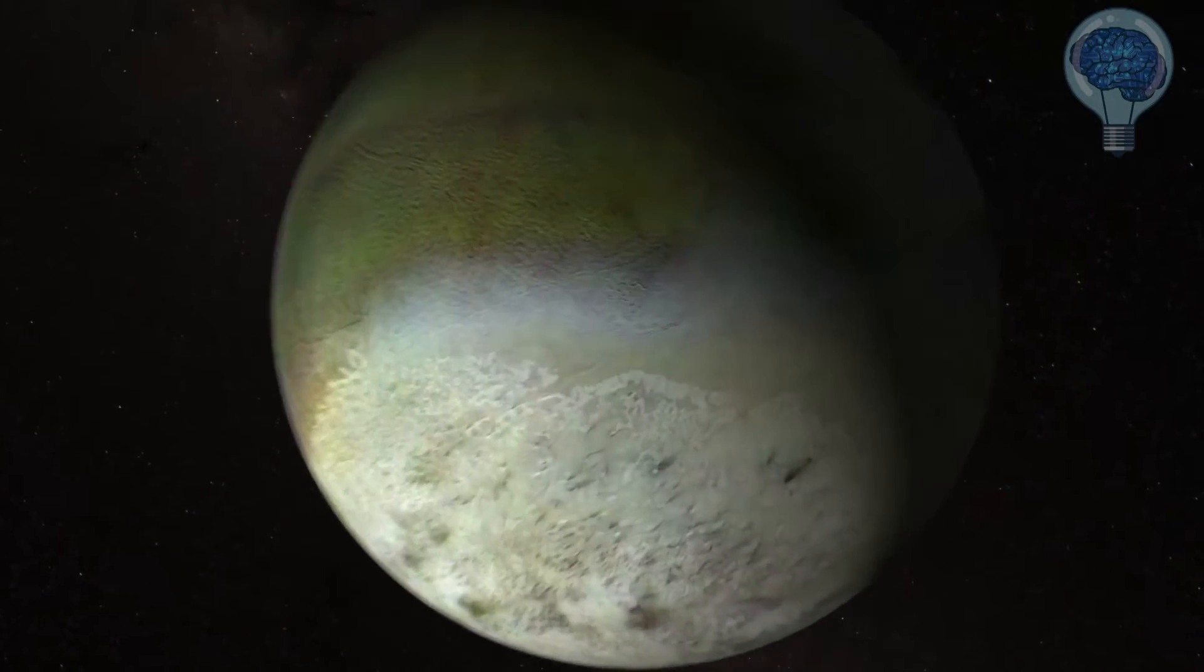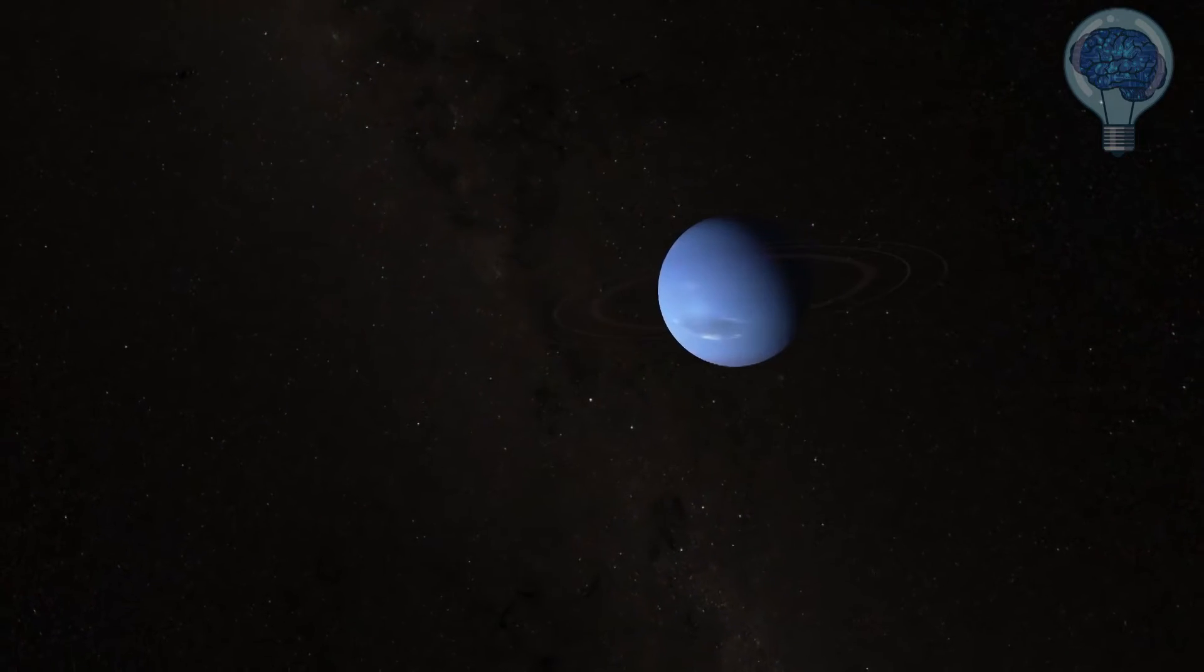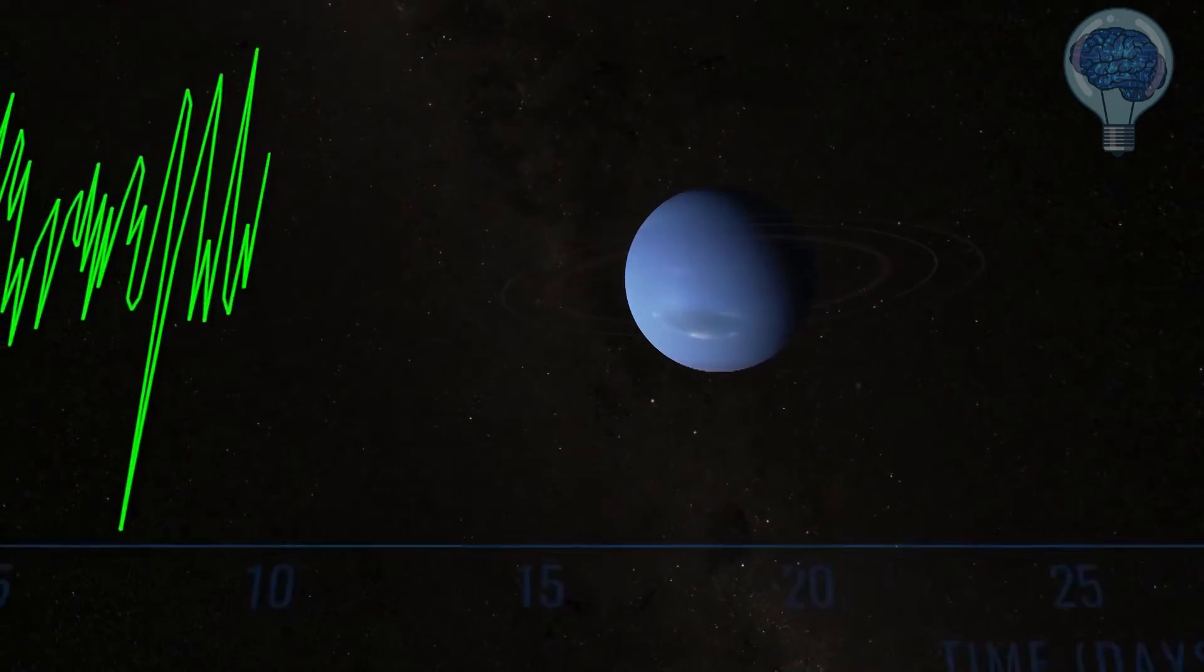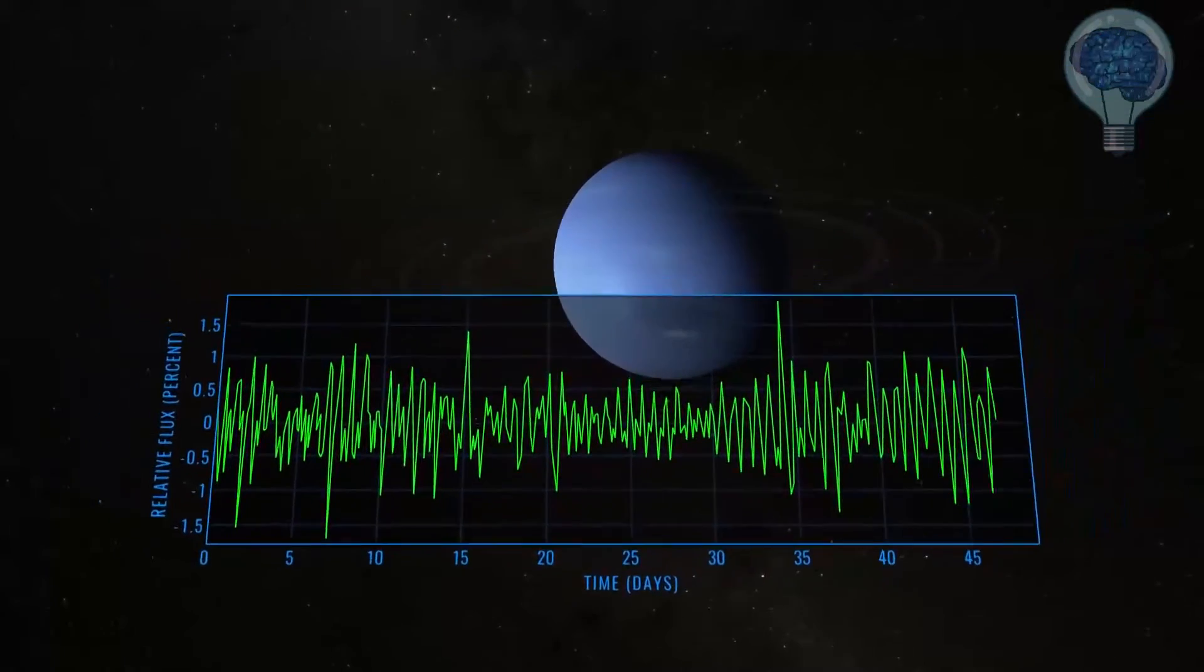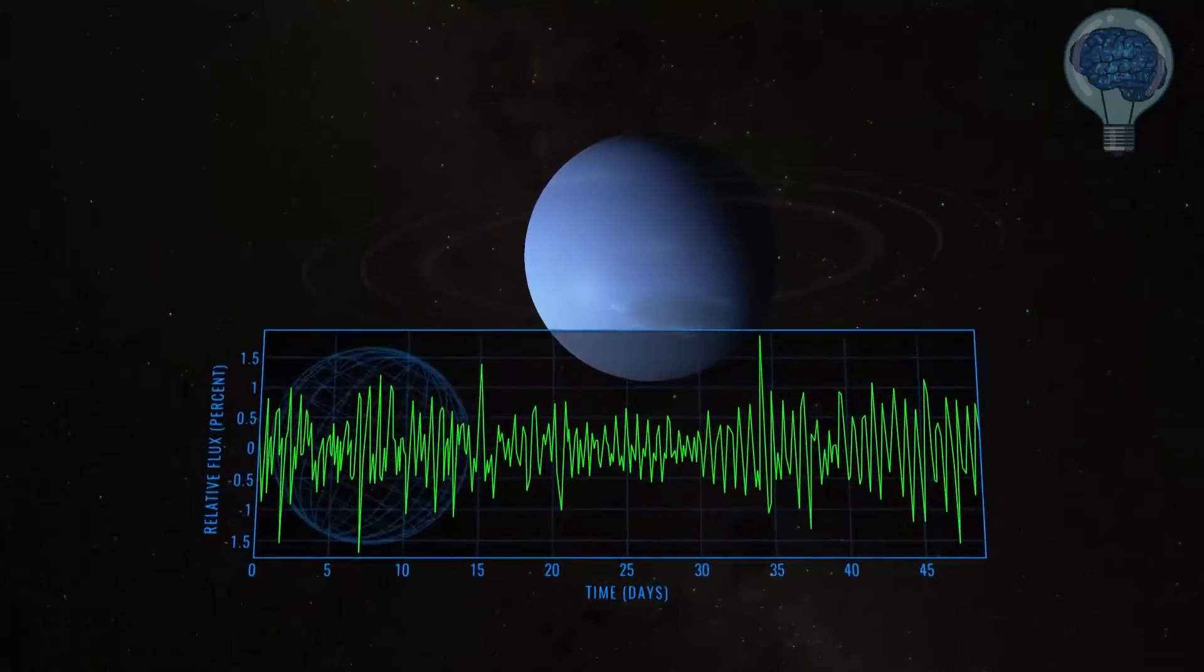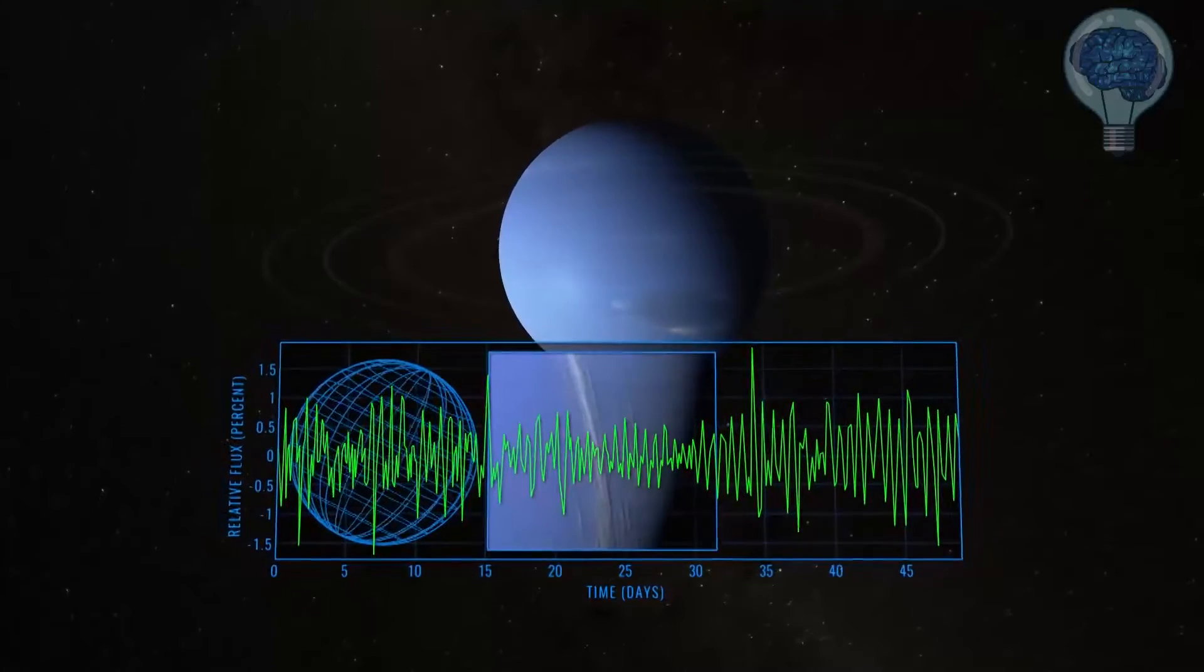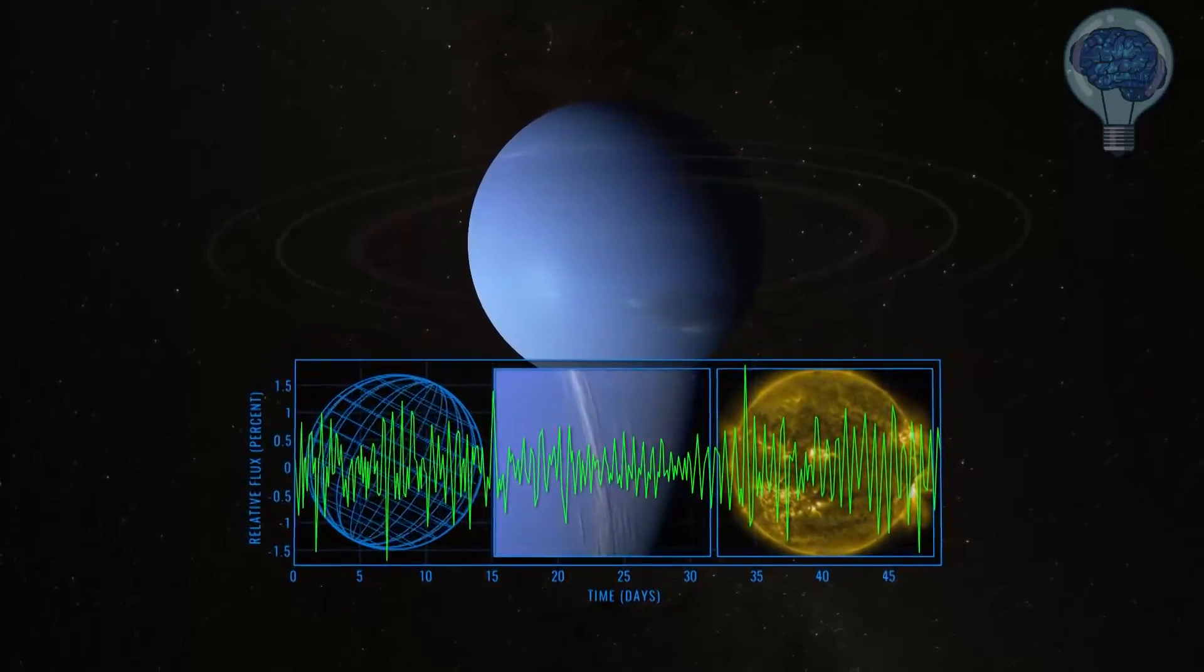During the Neptune observations, Kepler instead looked at changes in reflected sunlight. It measured fluctuations in Neptune's brightness of less than a single percent, caused by factors including the planet's daily rotation, the movement of clouds, and even seismic waves within the Sun itself.